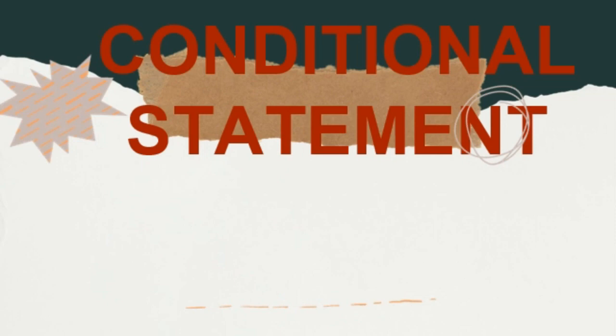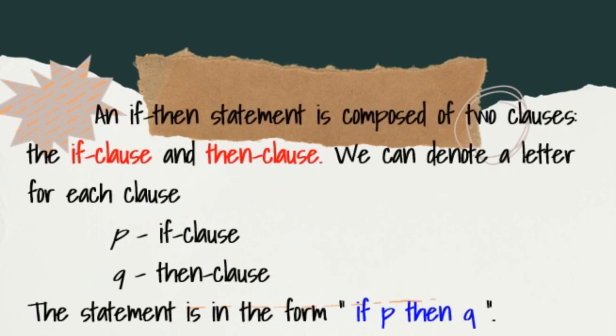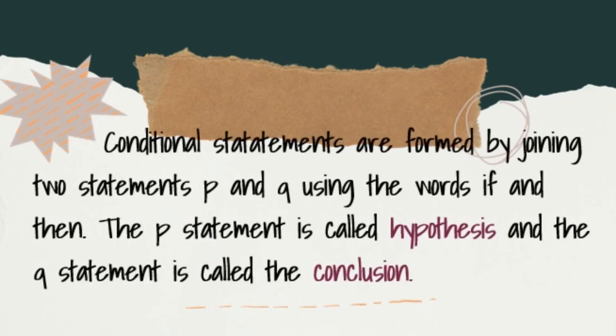Now, what is a conditional statement? A conditional statement is also called an if-then statement. An if-then statement is composed of two clauses: the if-clause and the then-clause. We can denote a letter for each clause — P for the if-clause and Q for the then-clause. The statement is in the form: if P, then Q. Conditional statements are formed by joining two statements P and Q using the words if-then. The P statement is called the hypothesis and the Q statement is called the conclusion.